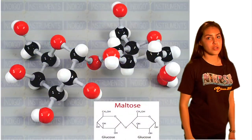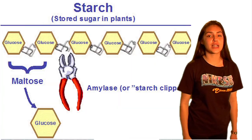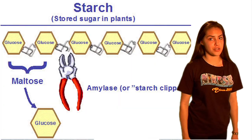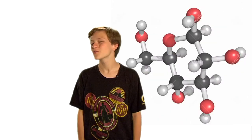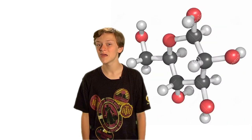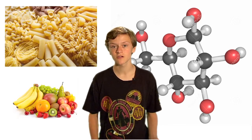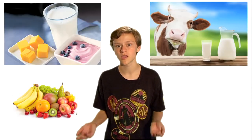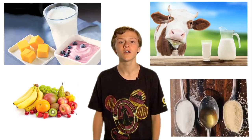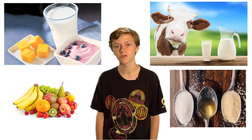I chose maltose because it interested me that sugar gets to break down from starch. Glucose can be found in many food items such as pasta, fruit, milk, yogurt, and sugar. Carbohydrates have the most glucose.